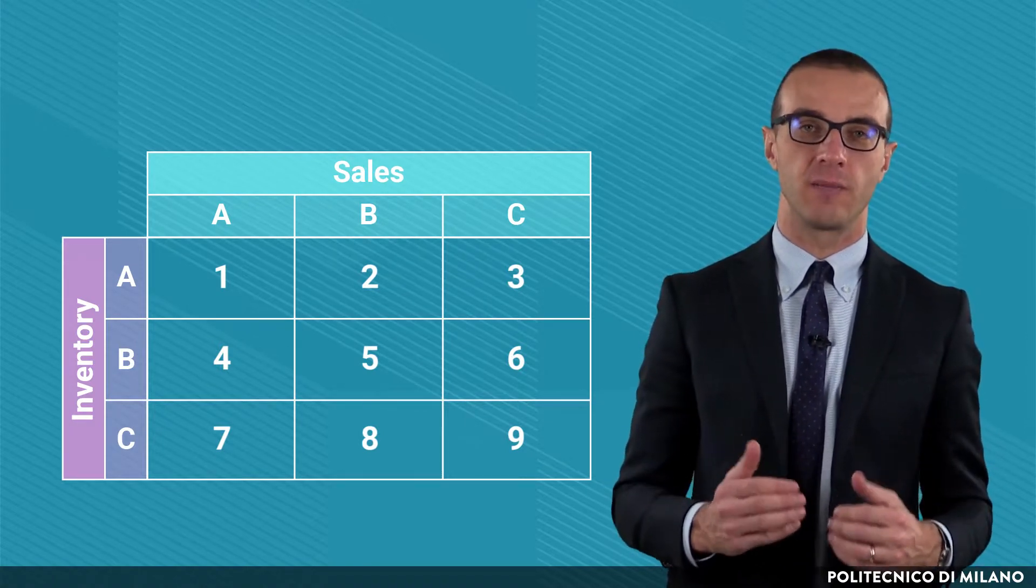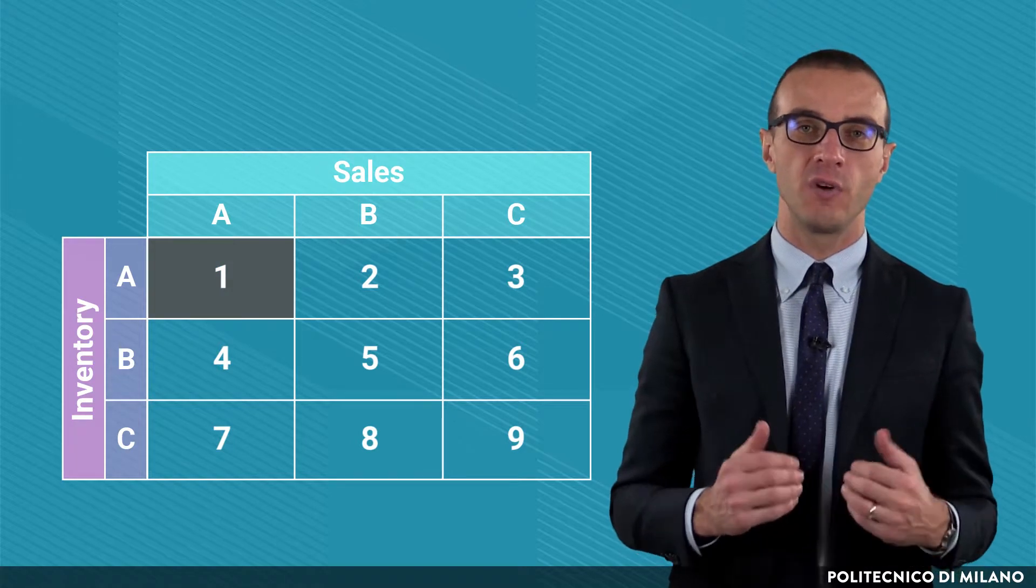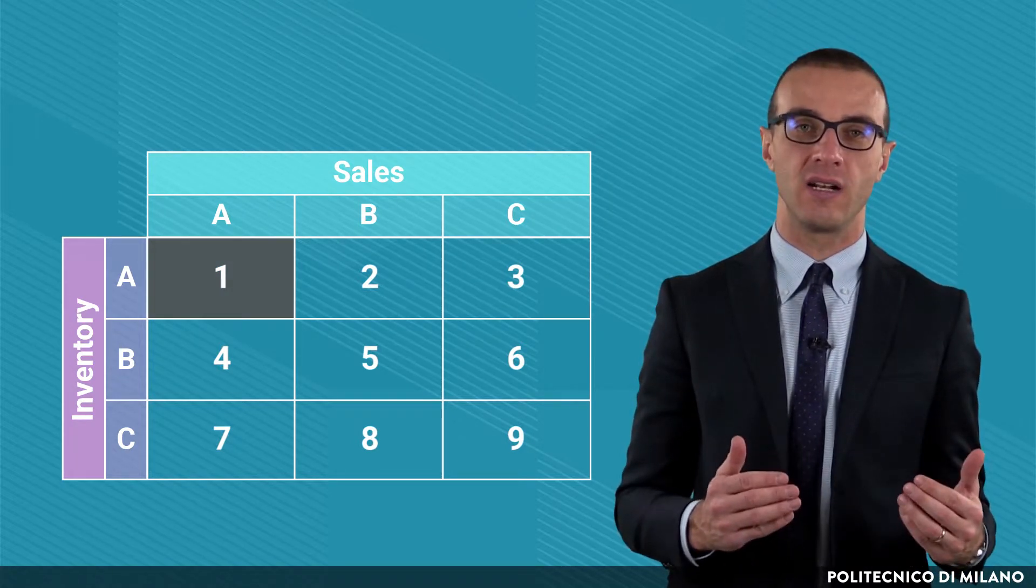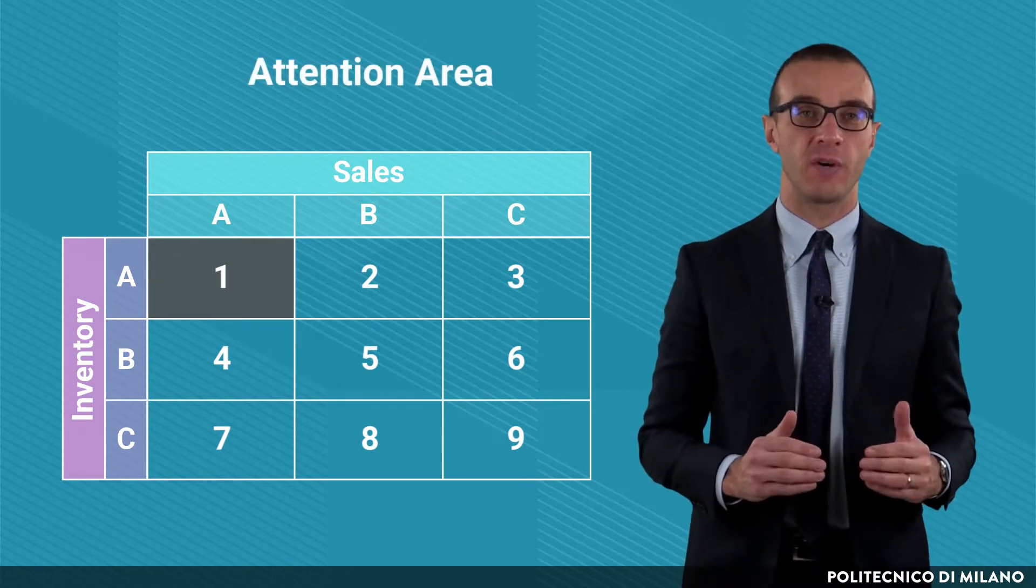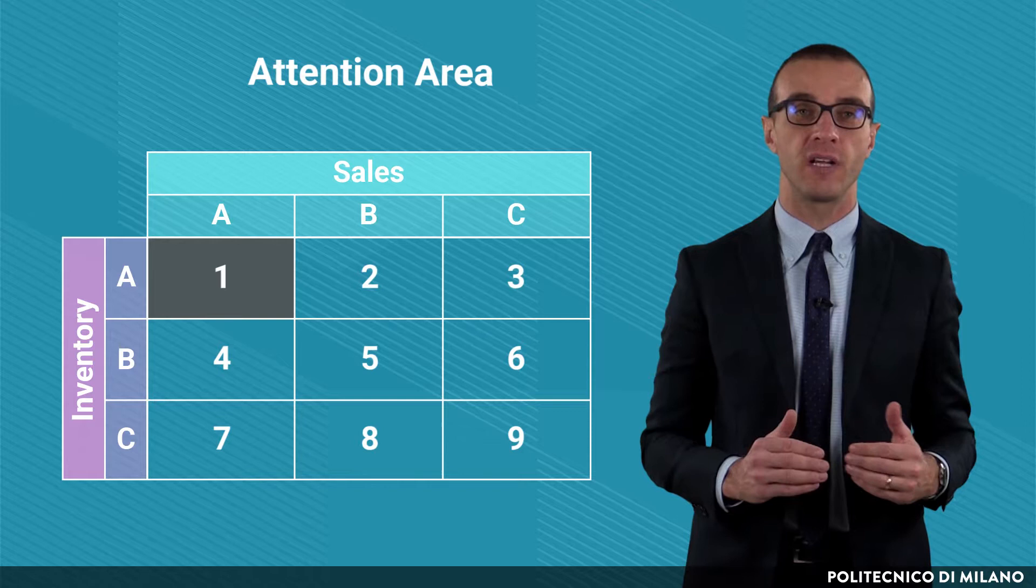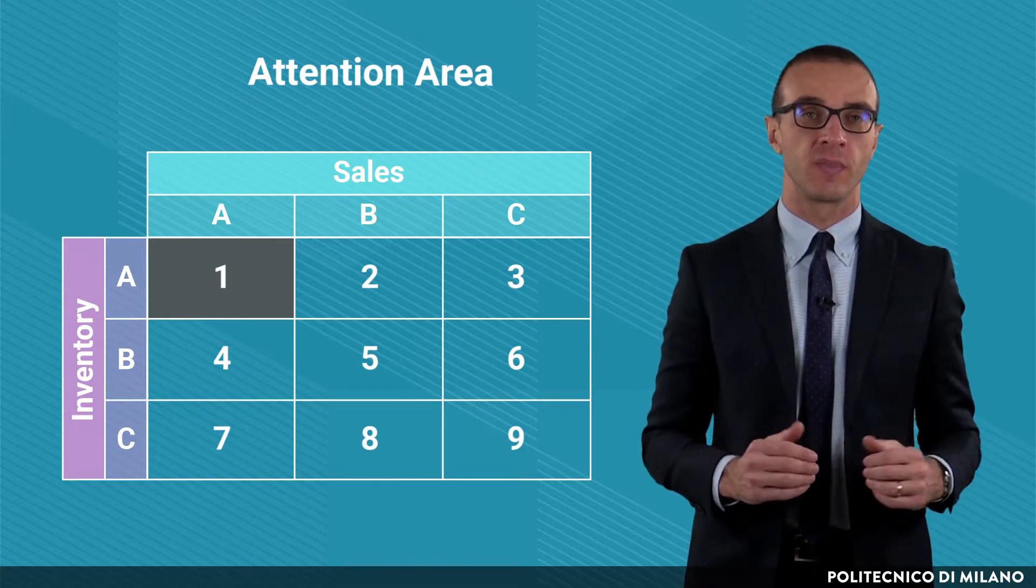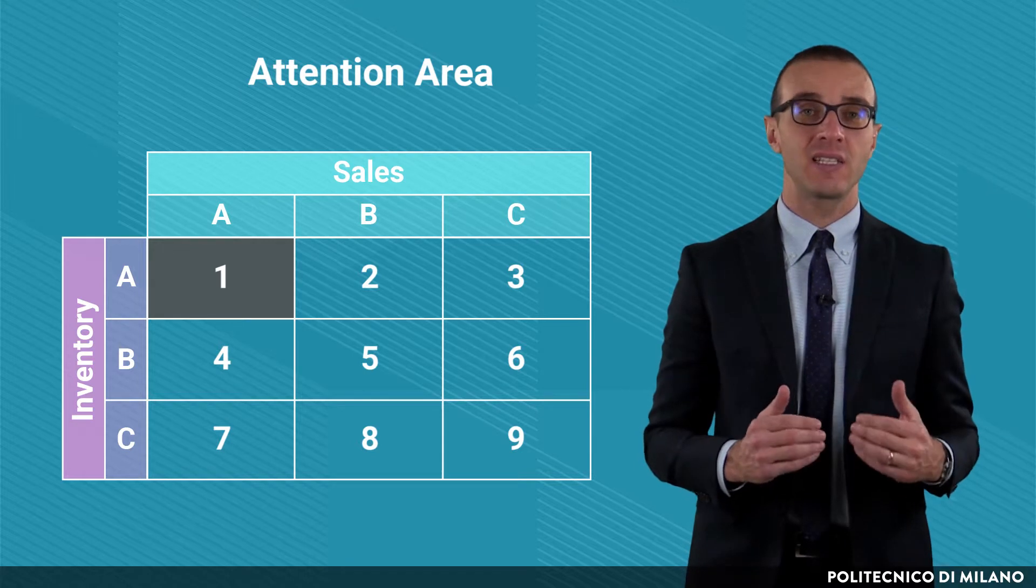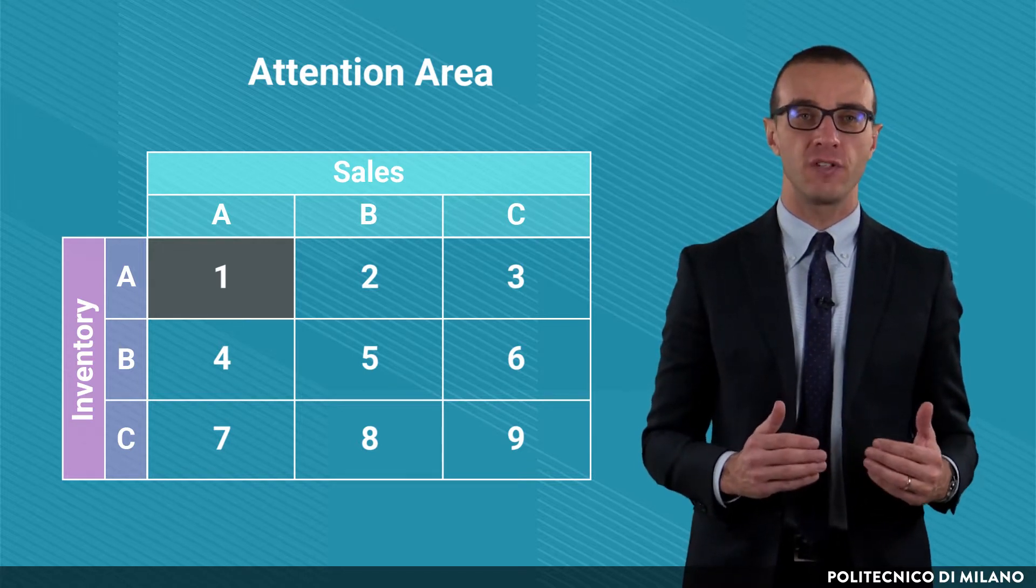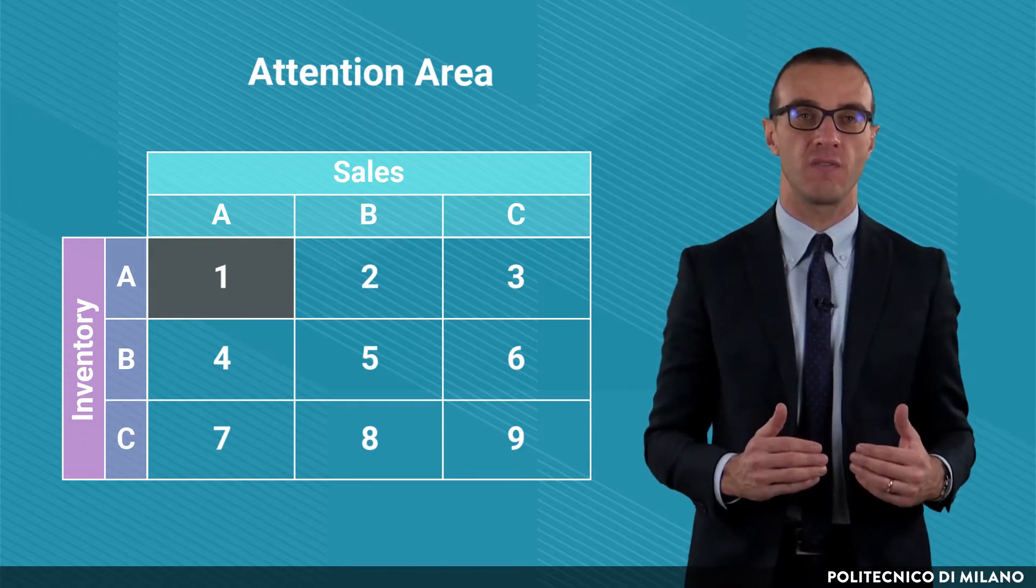Let's start from the first case, the AA items which are characterized by high sales and high inventories. The area is called attention area since these items represent both a risk and an opportunity. Stockouts would cause heavy drops of the turnover, and this class offers the highest opportunities in terms of inventory reduction in case there is extra inventory which is not needed.